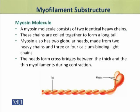A myosin molecule is a protein which consists of two identical heavy chains. These two heavy chains are coiled together and form a long tail. This tail is also formed of two heavy chains along with three or four calcium-binding light chains.